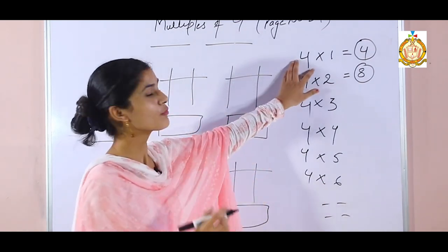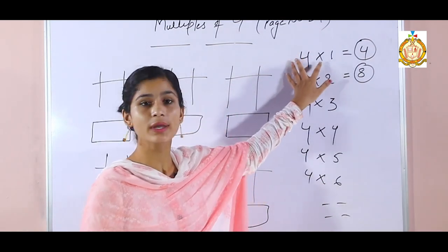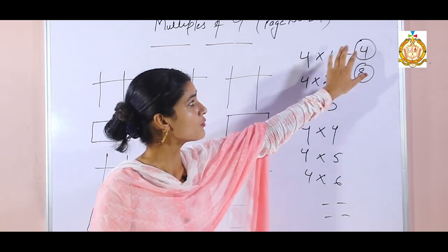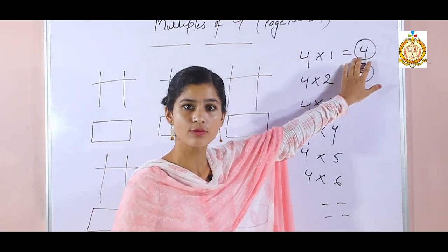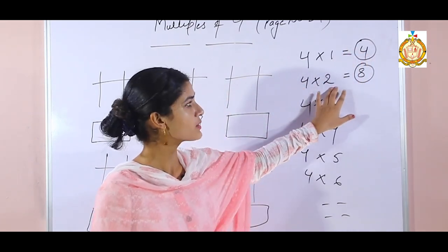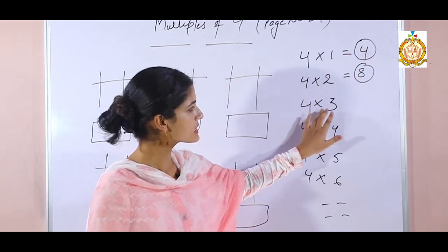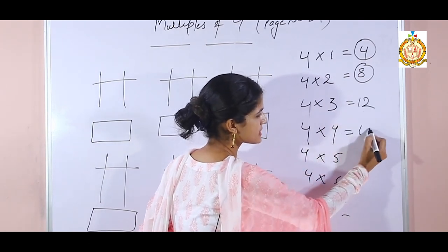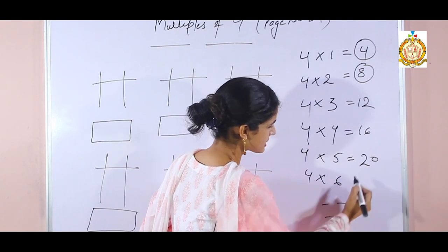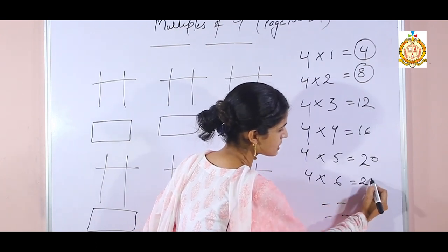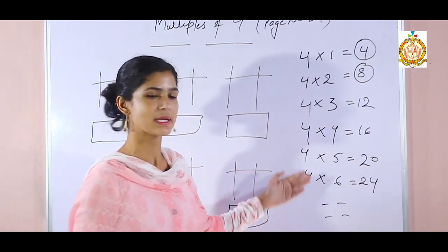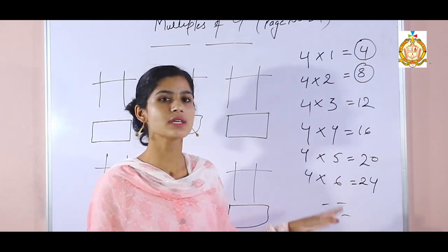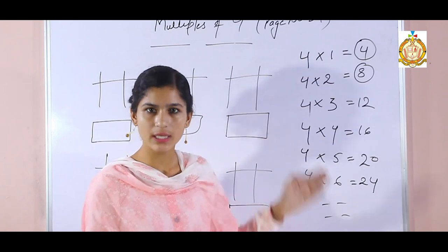Now we are talking about 4. We have to find out the multiples of 4. So firstly multiply 4 by 1 — that is 4. 4×2 is 8, 4×3 is 12, 4×4 is 16, 4×5 is 20, 4×6 is 24, 4×7 is 28, 4×8 is 32, and so on — just like a table.